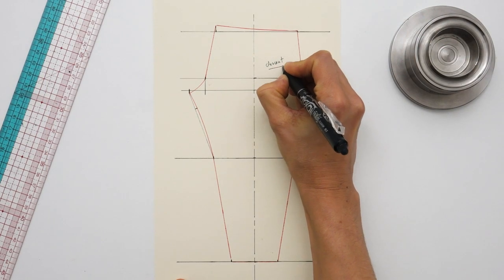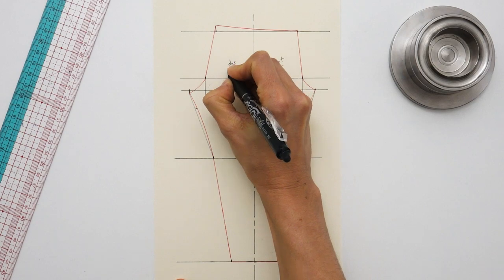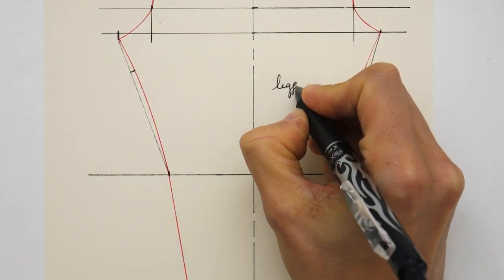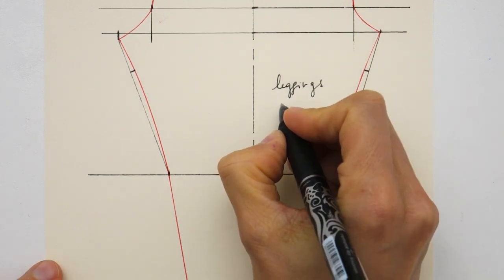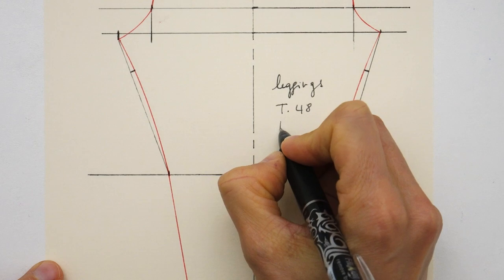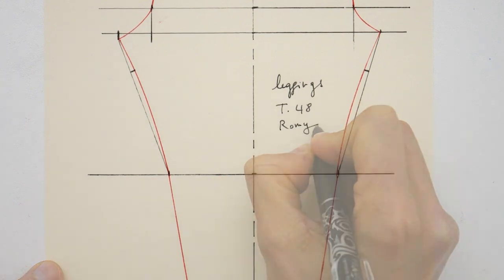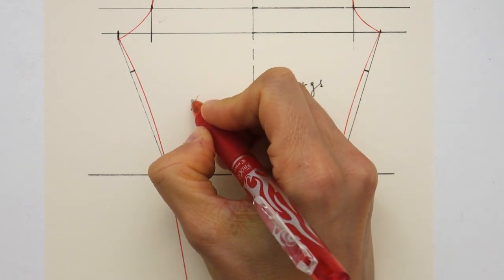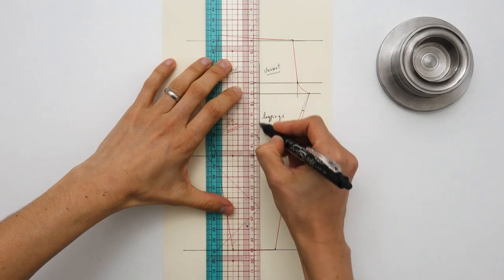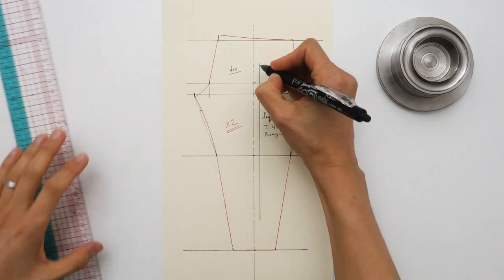Now, even though it is standard, it's important to write where is the front and where is the back of your piece, so you don't get confused later. Name your piece, indicate the size, maybe the name of your client, also how many times you should cut it—two times symmetrically for a legging—and also I like to trace the grain line.